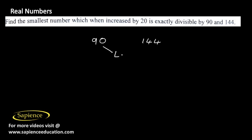The LCM of 90 and 144 is the smallest number that is exactly divisible by 90 and 144. So we need to find the smallest number which when increased by 20 is exactly divisible by 90 and 144.